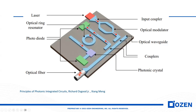Then we have a ring modulator and another waveguide here. The light comes to this waveguide and with the ring modulator, light is coupled to this waveguide. We have a photonic crystal waveguide here, and then we have a photodiode and also an optical fiber. These are the main components of a photonic integrated circuit.